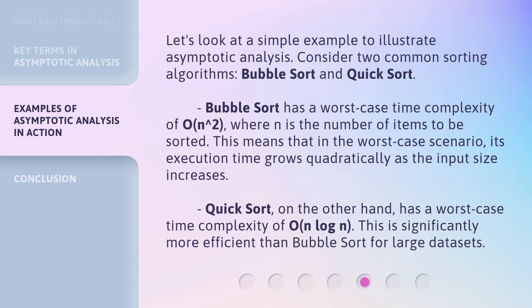Let's look at a simple example to illustrate asymptotic analysis. Consider two common sorting algorithms: Bubble Sort and Quick Sort. Bubble Sort has a worst-case time complexity of O(n²), where n is the number of items to be sorted. This means that in the worst-case scenario, its execution time grows quadratically as the input size increases.